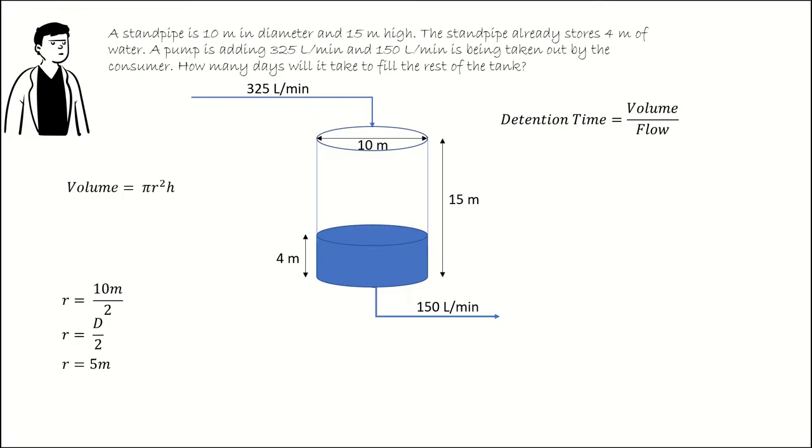The height of our volume of our tank is not the total height. Recall there's 4 meters of water already in the tank. Therefore, the working height of our tank is the difference. h is equal to 15 meters minus the 4 meters of water, or h is equal to 11 meters.